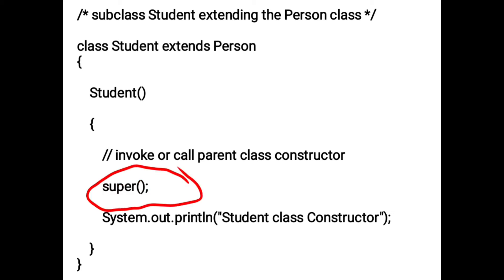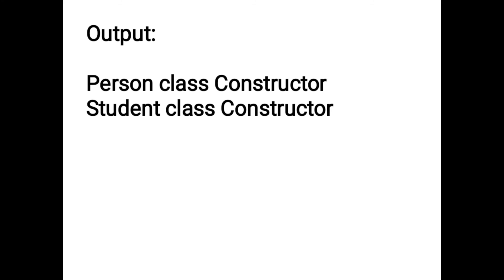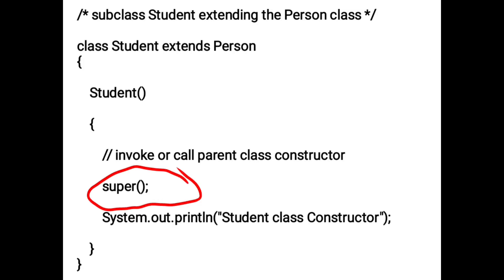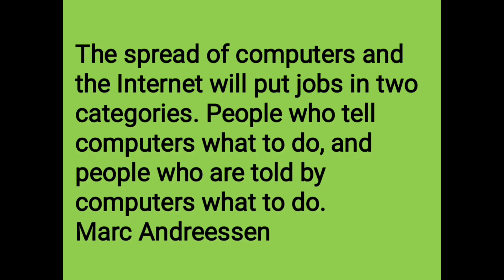Next I am writing an execution class named Test with the main method — public static void main. In this method I am creating one object of the subclass: Student s = new Student(). The output displays both the superclass output and the subclass output. Even though I am creating only the subclass object, it also displays the superclass output, because the subclass constructor uses super to access the superclass properties. So the output displays both the superclass and subclass constructor messages.